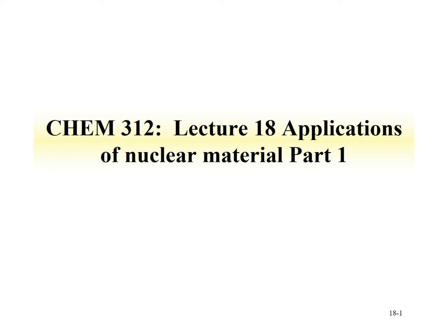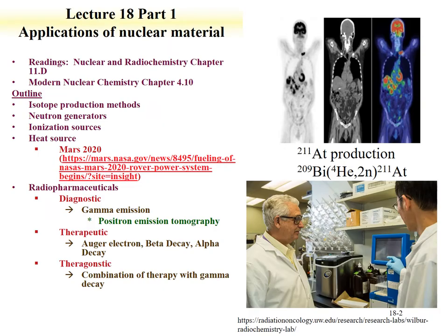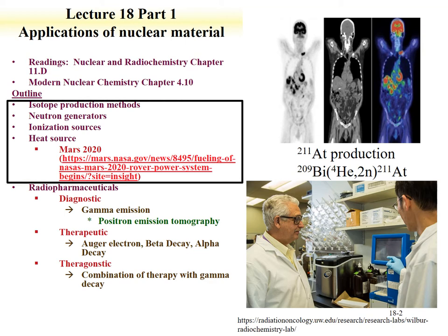Welcome to Lecture 18 for Chemistry 312, Radiochemistry. This lecture is on Applications of Nuclear Material, and it's in two parts. The readings for Part 1 are from Readings of Nuclear and Radiochemistry, Chapter 11d, and Modern Nuclear Chemistry, Chapter 4.10. There are also links to websites interspersed in the lecture providing additional reading material. Part 1 covers isotope production methods, neutron generators, ionization sources, and heat sources.